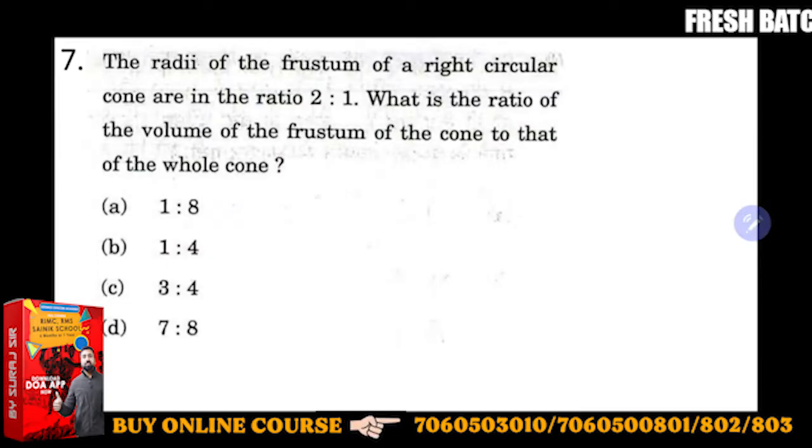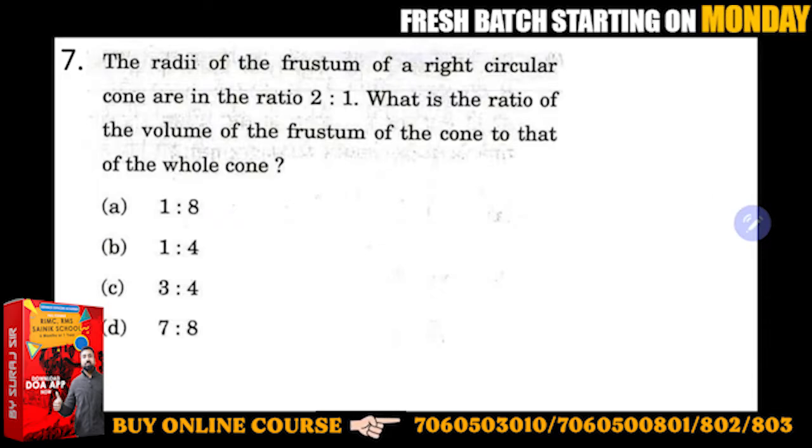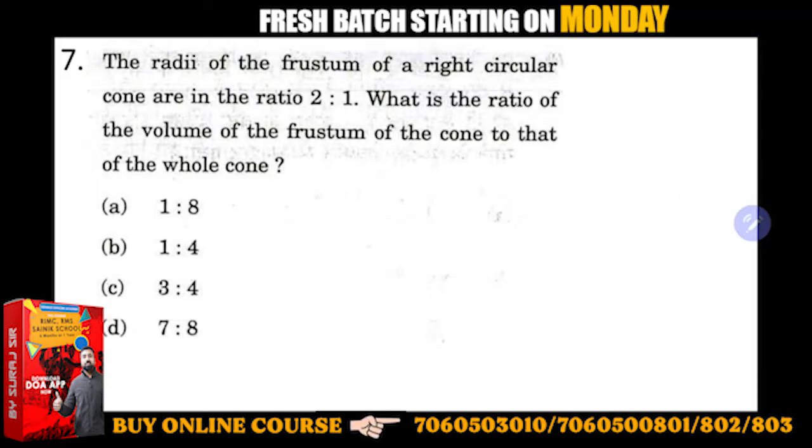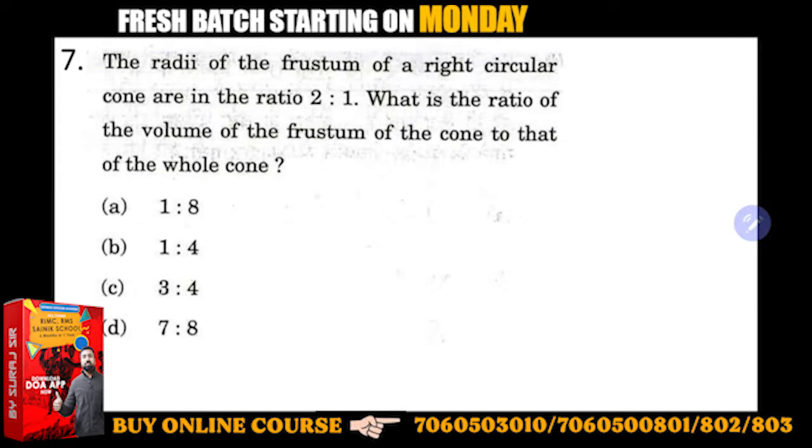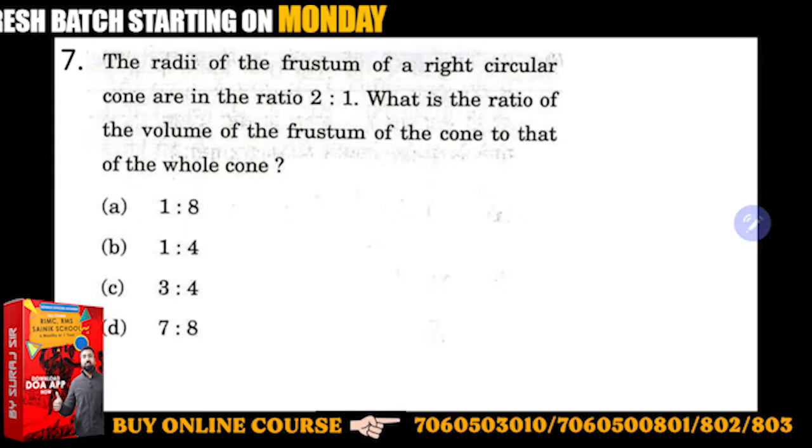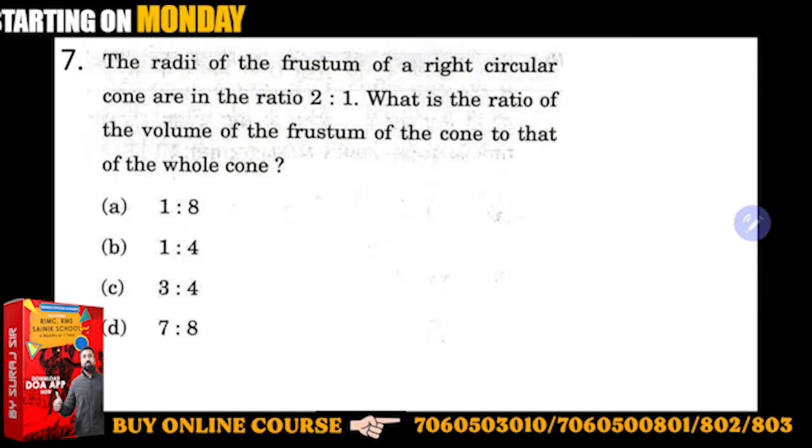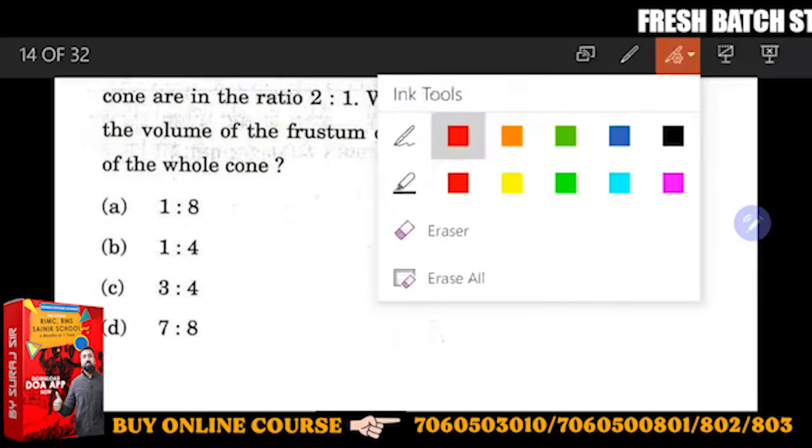The radii of the frustum of a right circular cone are in the ratio 2:1. What is the ratio of the volume of the frustum of the cone to that of the whole cone? What is the meaning of frustum? Let me tell you how to solve this problem.